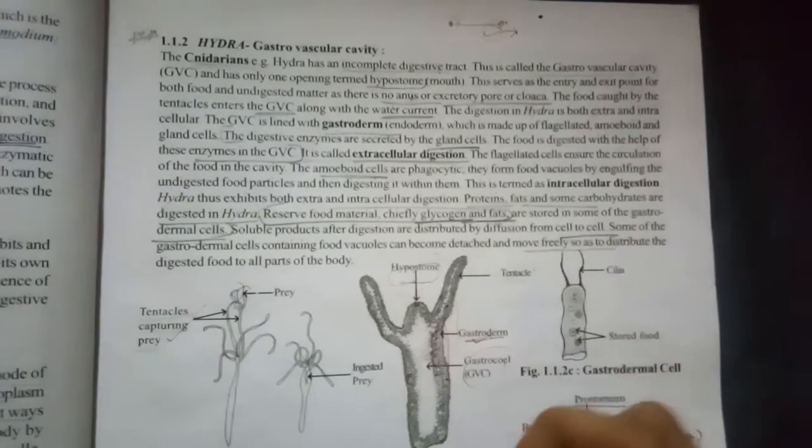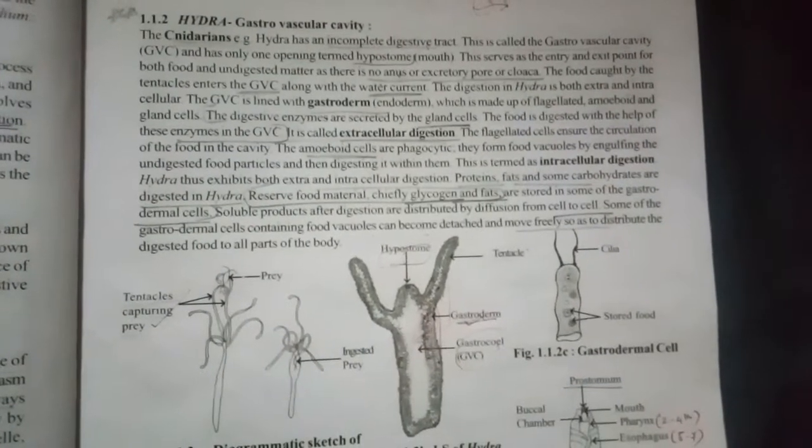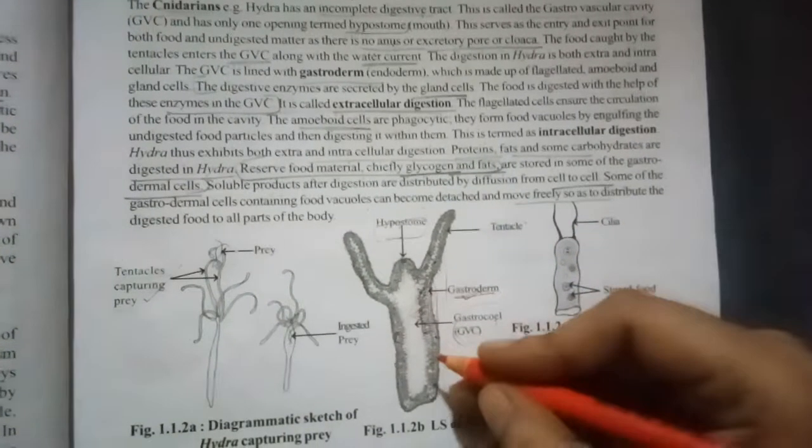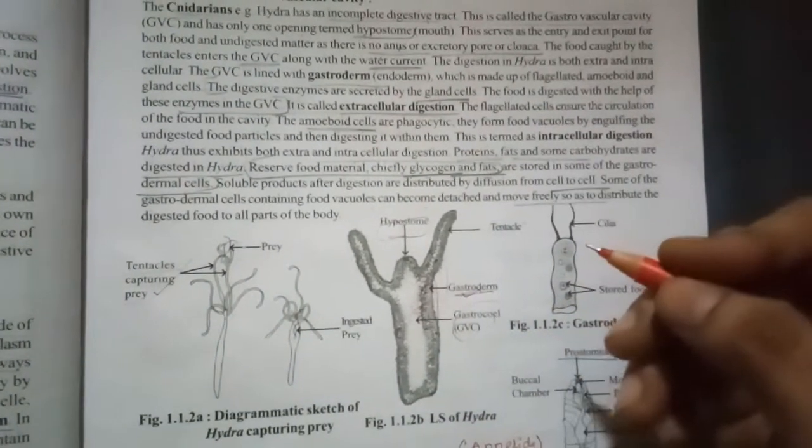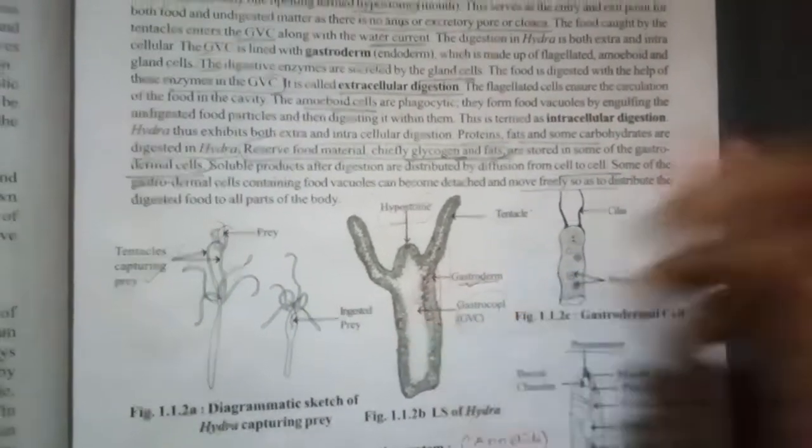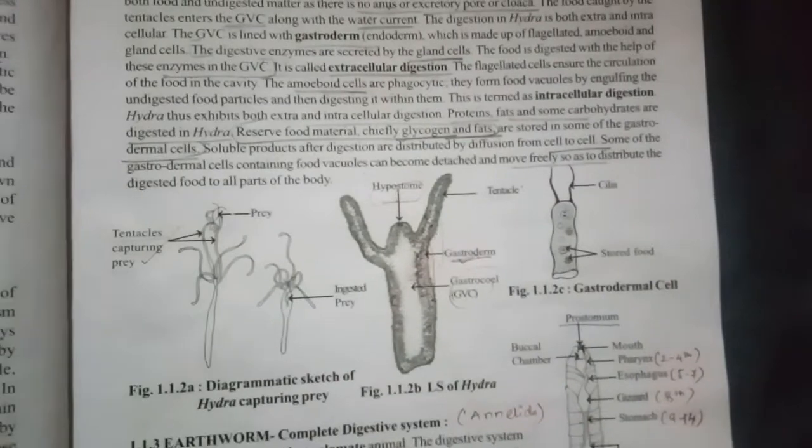Another mode of digestion in Hydra is intracellular digestion. Like these gland cells will show phagocytosis, that is engulfing the food particle. So that is intracellular digestion and extracellular is gland cells or amoeboid cells will secrete the digestive enzymes and digest the food material.